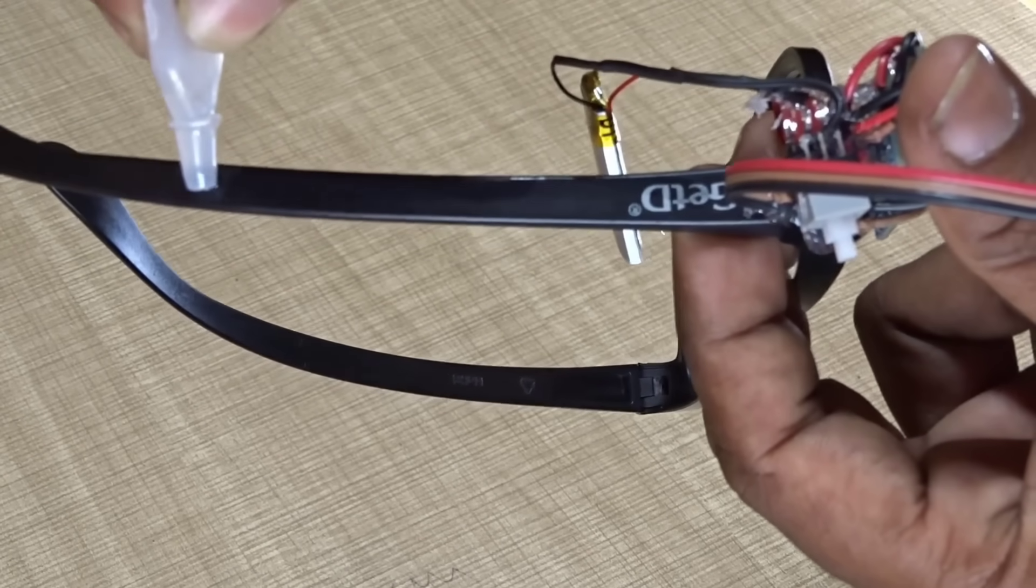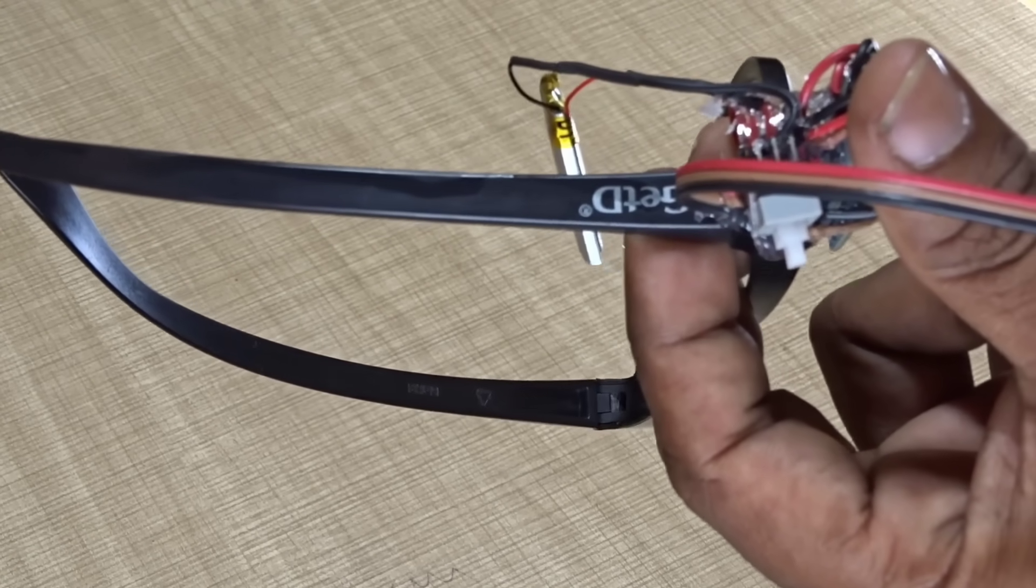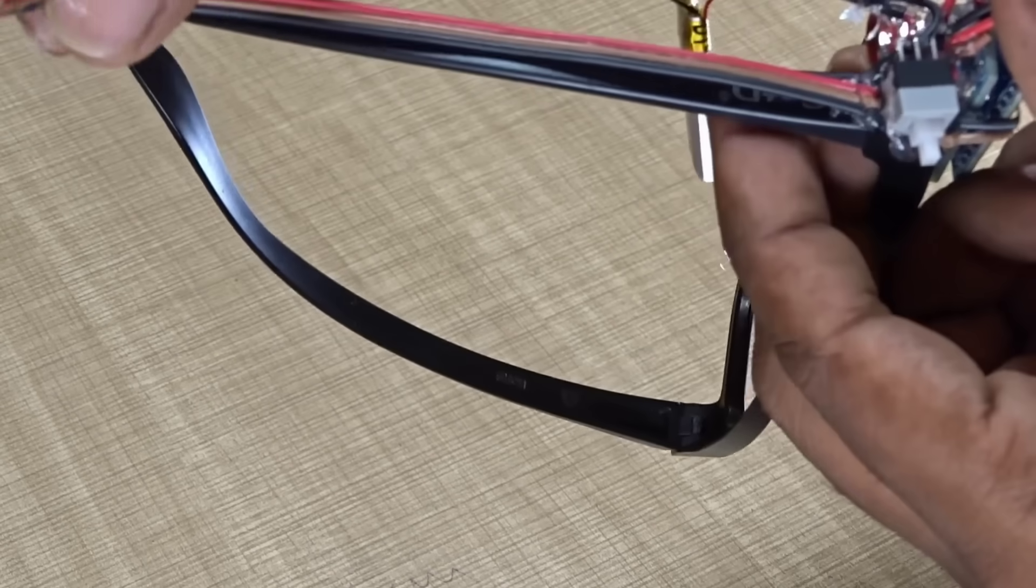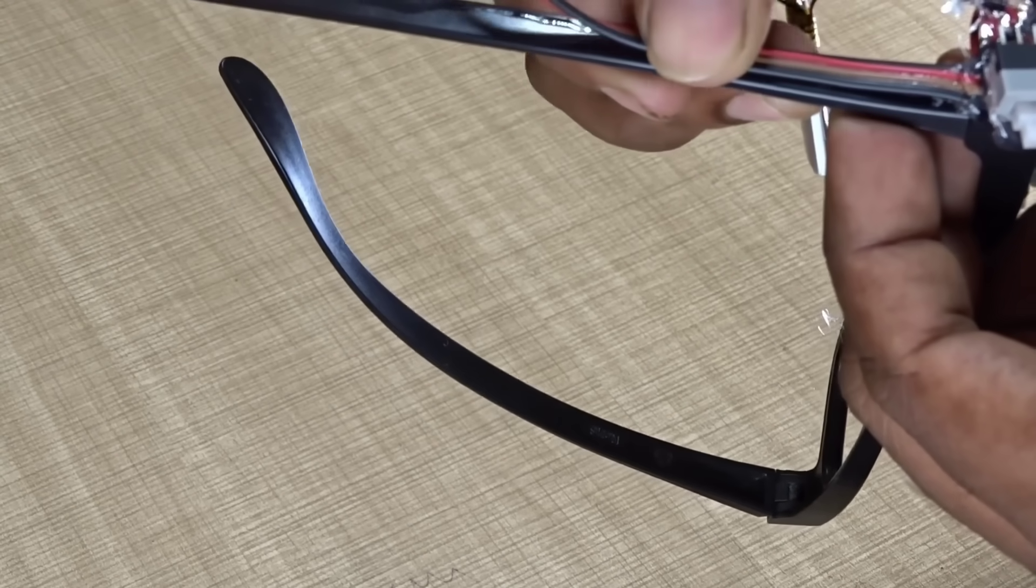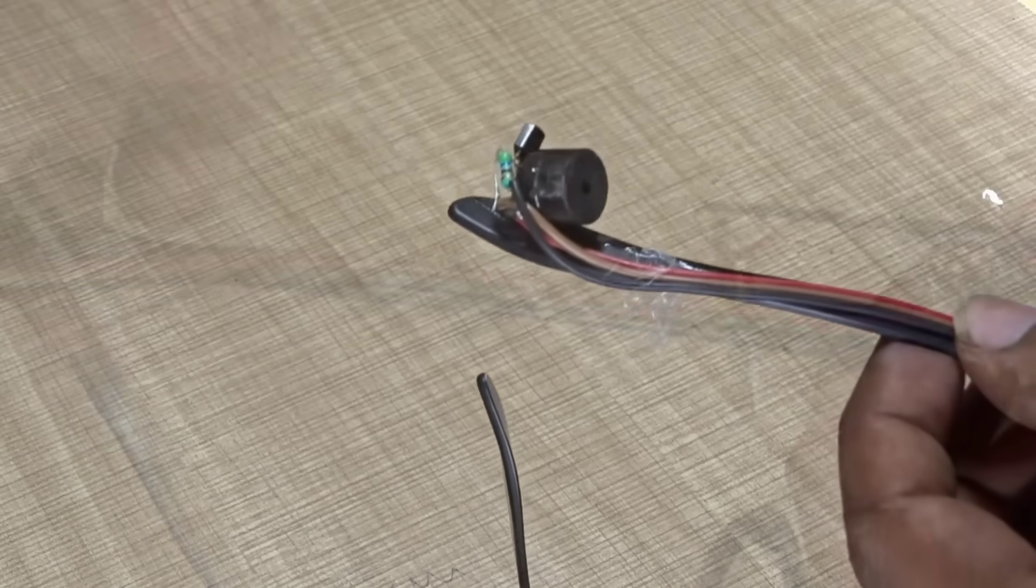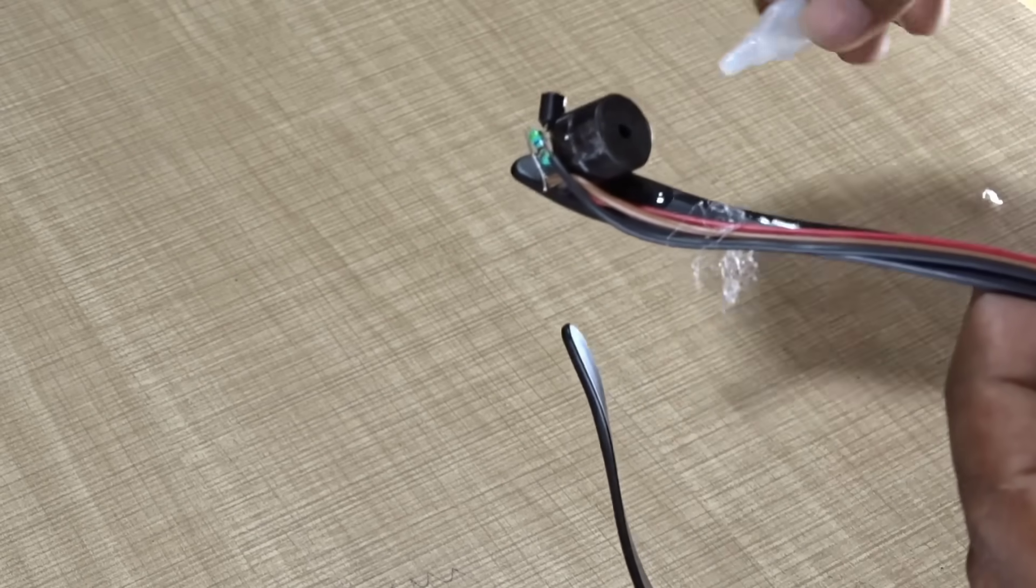and buzzer are all fixed in such a way that they don't stick out awkwardly or interfere with the user's vision or comfort. Try to place the components along the inner side of the glasses frame where they're less visible but still secure and accessible for maintenance. Once all individual parts are mounted, it's time to focus on assembling the full body.